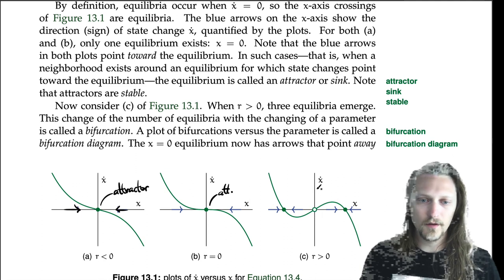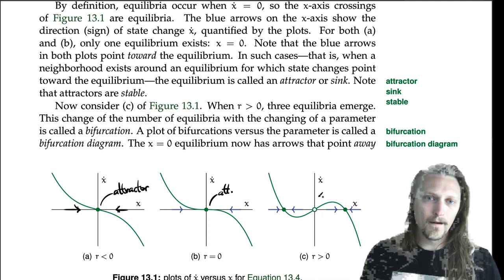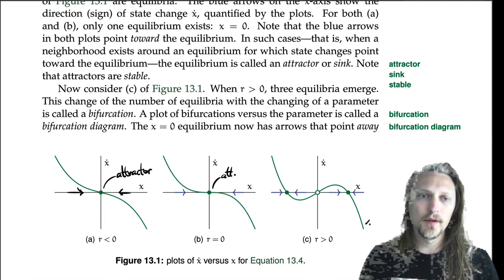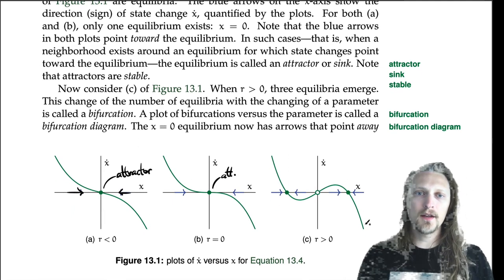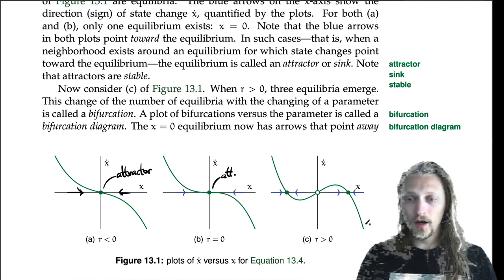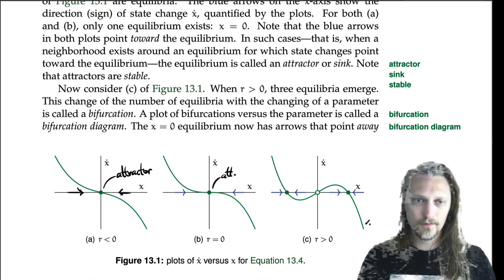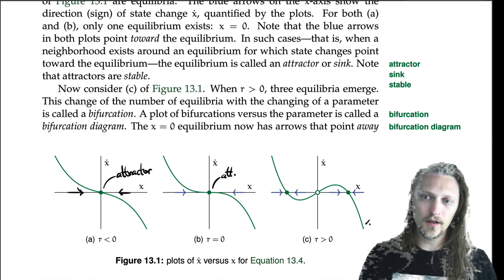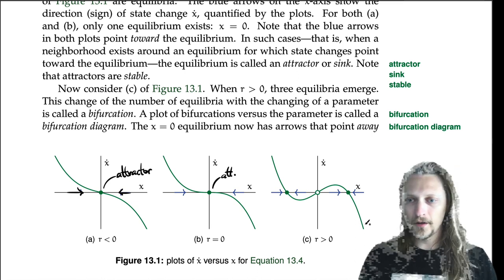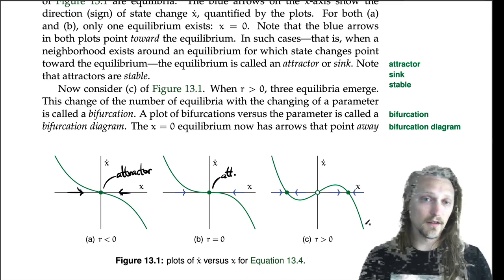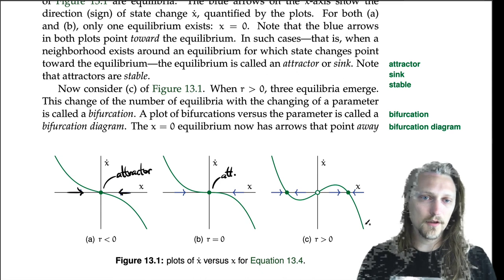In figure 13.1(c), when r is greater than zero, three equilibria emerge. This change in the number of equilibria with the changing of a parameter r is called a bifurcation. A plot of equilibria versus the parameter is called a bifurcation diagram. You will see this in the nonlinear dynamics literature quite a bit.